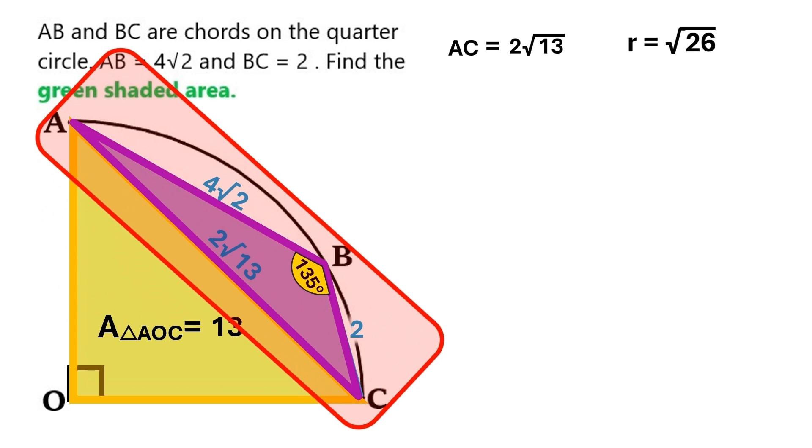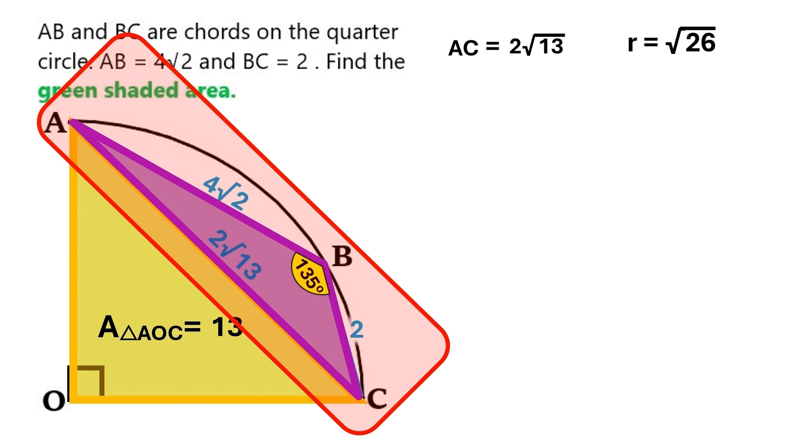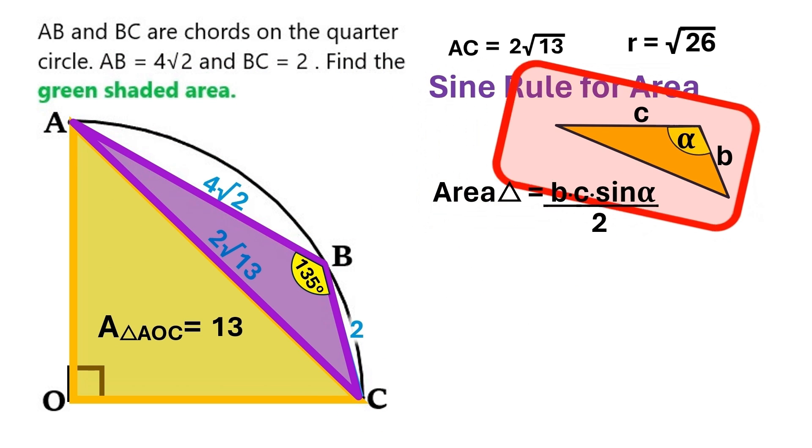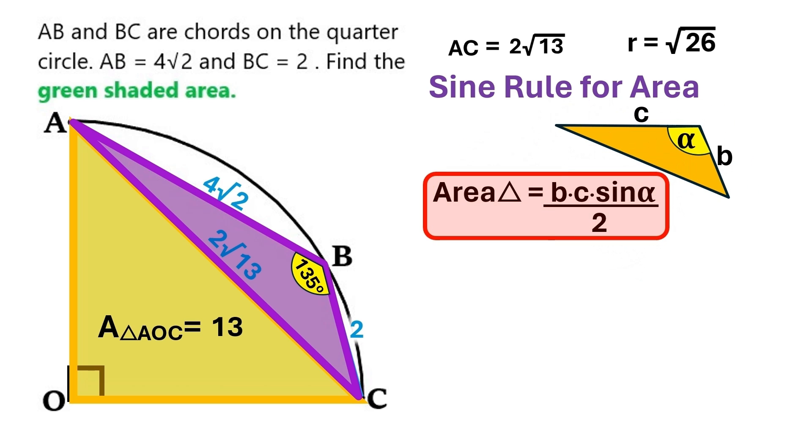Let's revisit this purple triangle ABC. We'll find this triangle's area by using the sine rule for the area. According to the sine rule, if we know the measure of a particular angle in a triangle, and the length of the two adjacent sides, this formula can tell us the triangle's area.